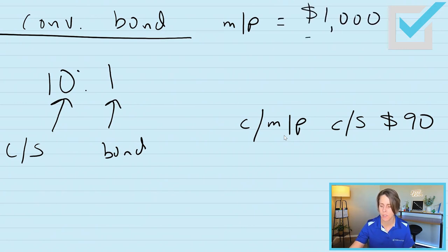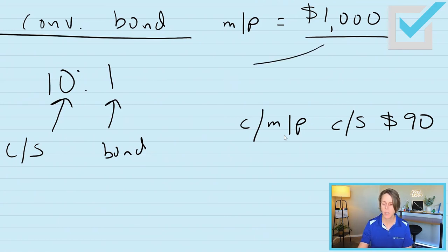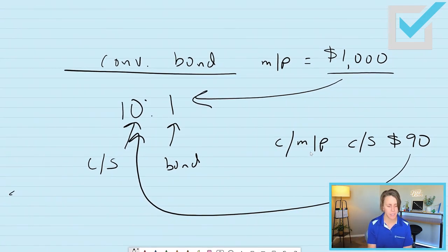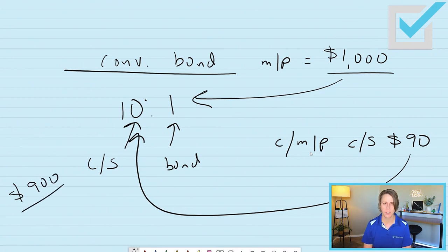So if this convertible bond was trading at par value — $1,000 — would you want to give up your one bond worth $1,000 to get 10 times $90, worth only $900? Would you want to convert? No. So that would be what we call below parity — keep your convertible bond.